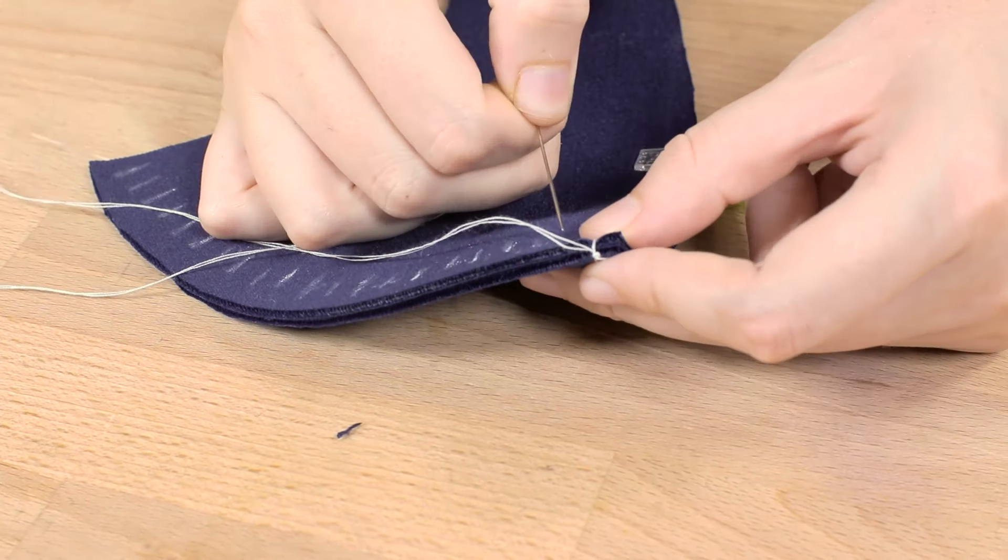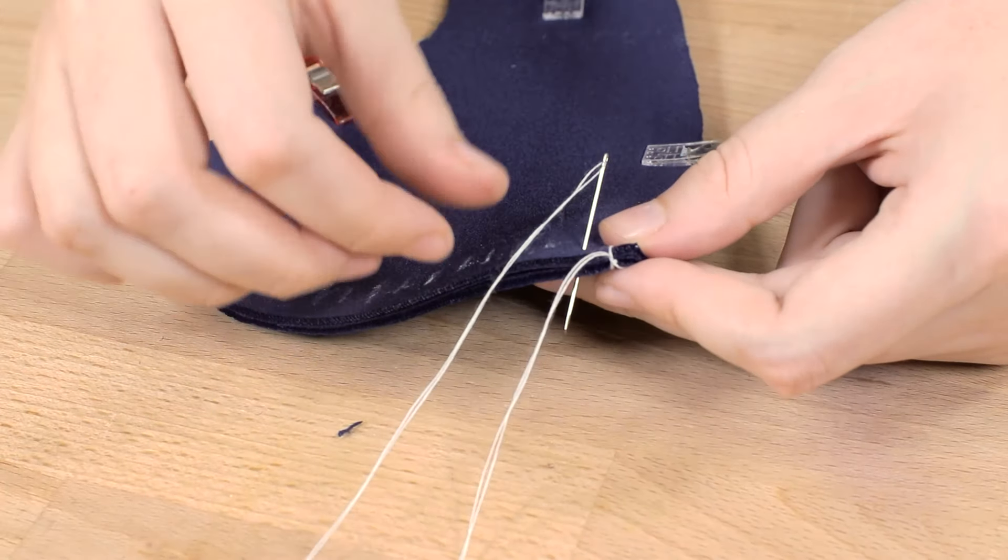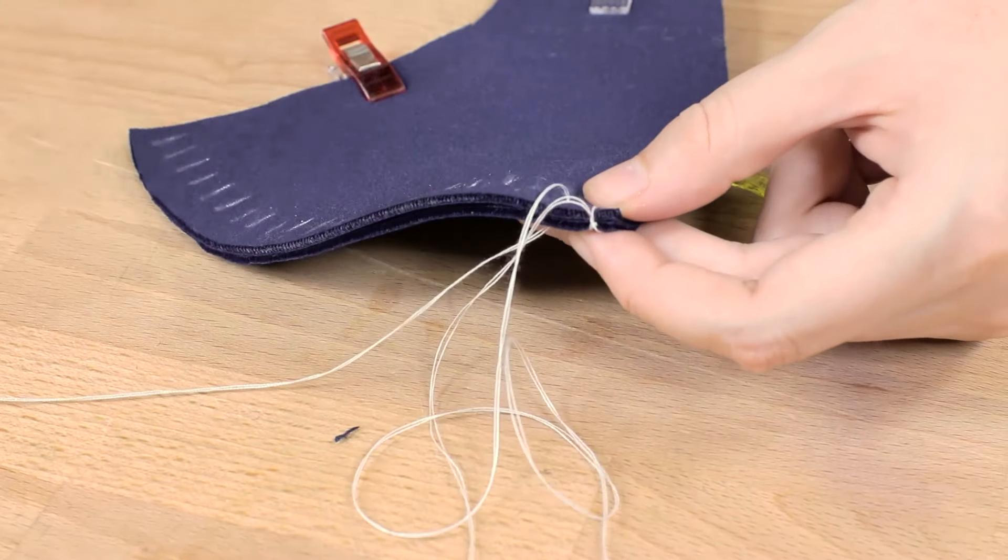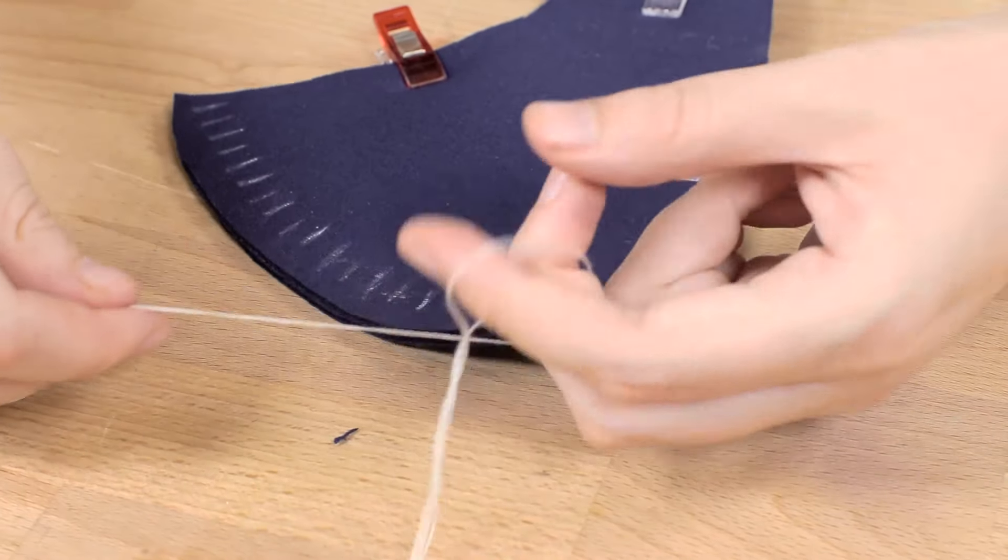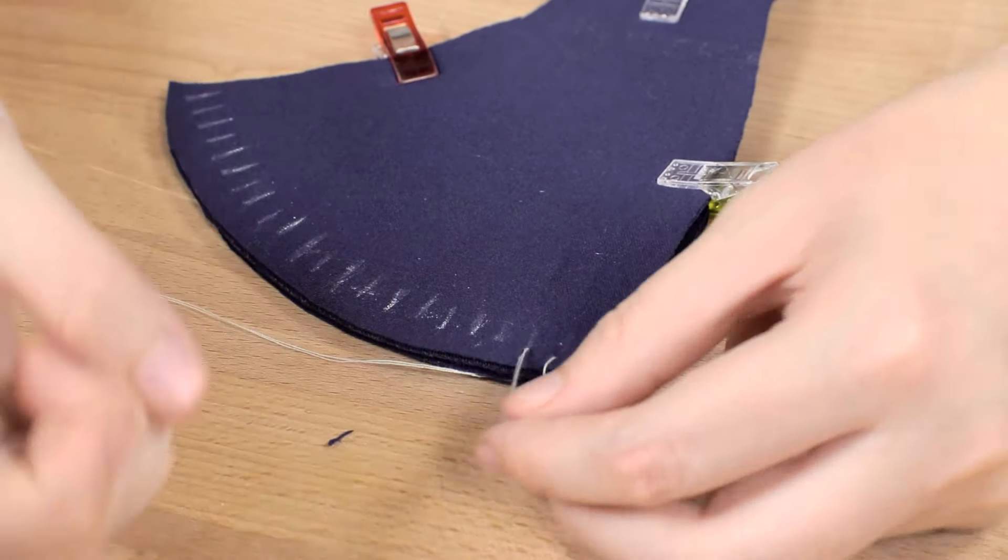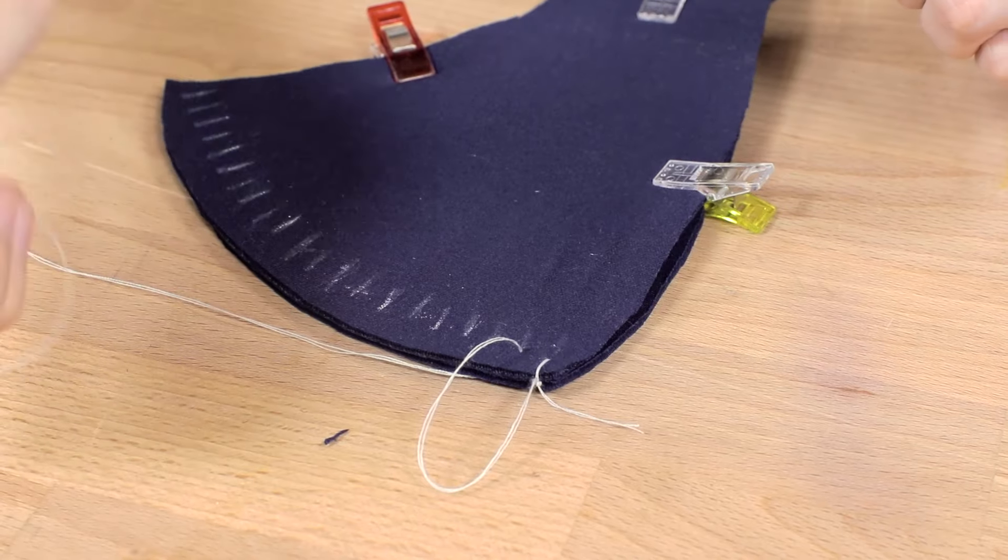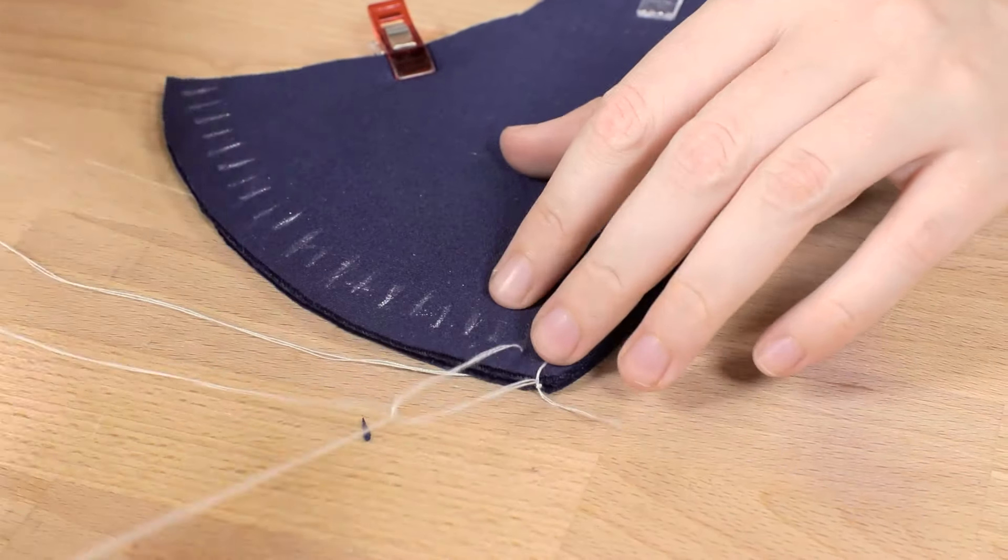Push the needle through the second mark. This time there will be a loop that starts from the last stitch. You'll want to string the needle through that loop and then continue the pattern.